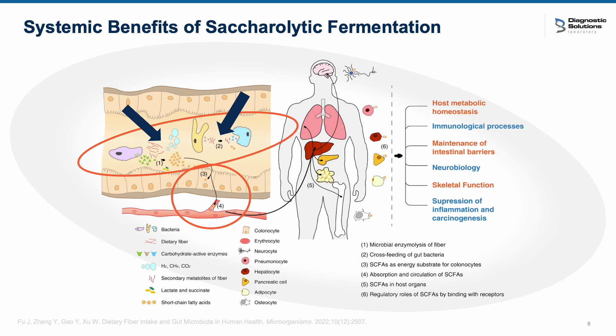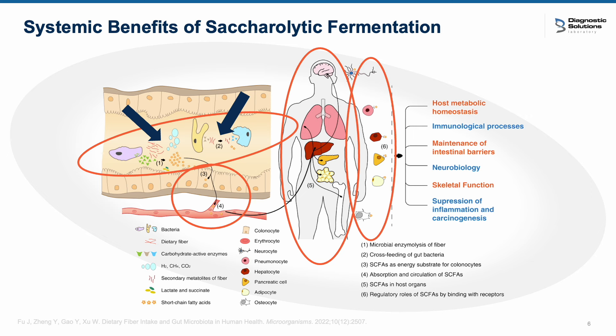Here are some examples of SCFAs' effects on different cells. In nerve cells, butyrate crosses the blood-brain barrier and can promote neuroprotection, neurogenesis, and improved cognitive health. In lung cells, acetate and butyrate have an anti-inflammatory effect that may help with asthma and COPD. In liver cells, SCFAs regulate glucose production, cholesterol, and fat metabolism, and reduce liver inflammation, protecting against NAFLD. In pancreatic cells, propionate enhances insulin sensitivity and glucose regulation, while butyrate protects beta cells from inflammation and improves insulin secretion. In fat cells, SCFAs increase fat oxidation, reduce inflammation, improve insulin sensitivity, and regulate appetite via hormones like leptin and PYY. Overall, these SCFAs offer systemic benefits affecting multiple organs and tissues beyond the gut.